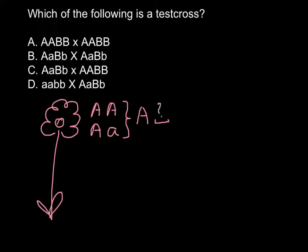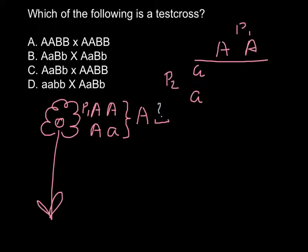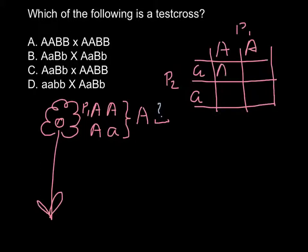For example, if parent one is a double dominant plant, and we cross it with a test cross parent two that is homozygous recessive, the outcomes will be that all plants look the same — all of them would be capital A small a.